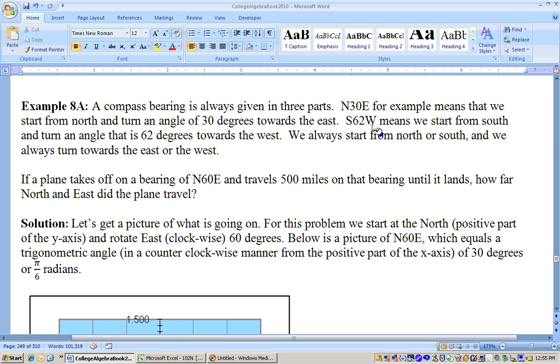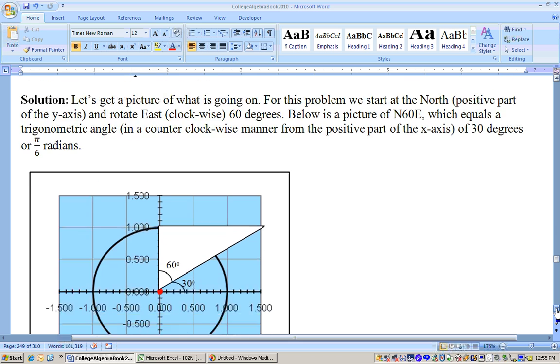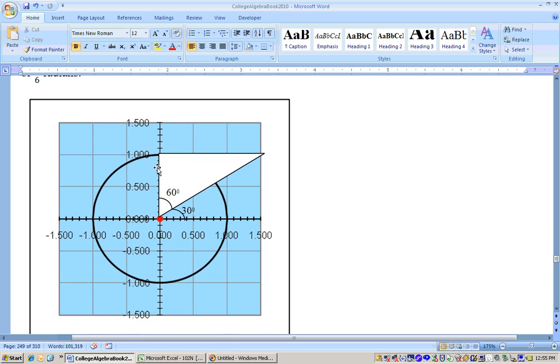South 62 west means that we start at the south and we turn an angle of 62 degrees to the west. Now the only thing how that affects us is this. This is north 60 east. That means you start off north, then you do an angle measurement of 60 degrees to the east. Well, that means for us that we have to use an angle measurement of 30 when we're doing trig functions of 30 degrees.